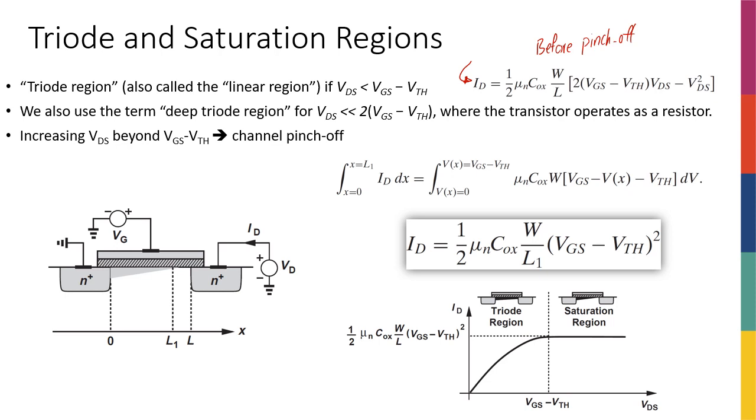We have this parabolic expression, and we actually plotted that. The plot looked something like this, and we saw that if we actually increase Vds, it's going to go down parabolically. We saw that it actually peaks when Vds is equal to Vgs minus Vth. This was two slides ago.